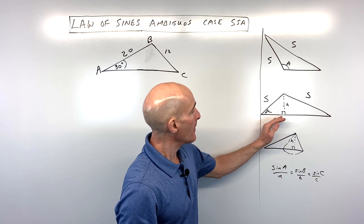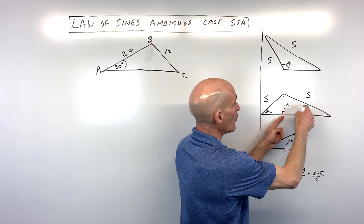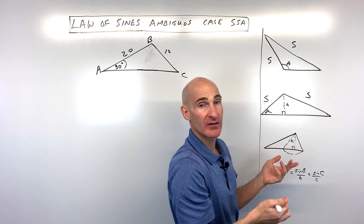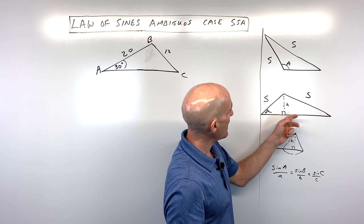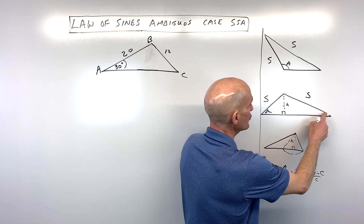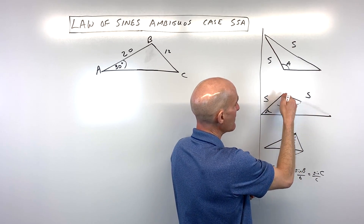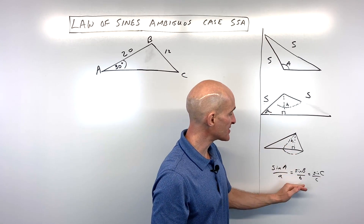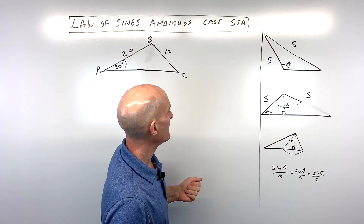That two-triangle case is what we're going to look at in this video. If the side across from the acute angle is exactly the same length as the altitude, you have a right triangle — one triangle possible. And if that side is shorter than the altitude, it won't be long enough to reach the opposite side, so there's no triangle. When you do the Law of Sines, you'll get an error message on your calculator in that case.